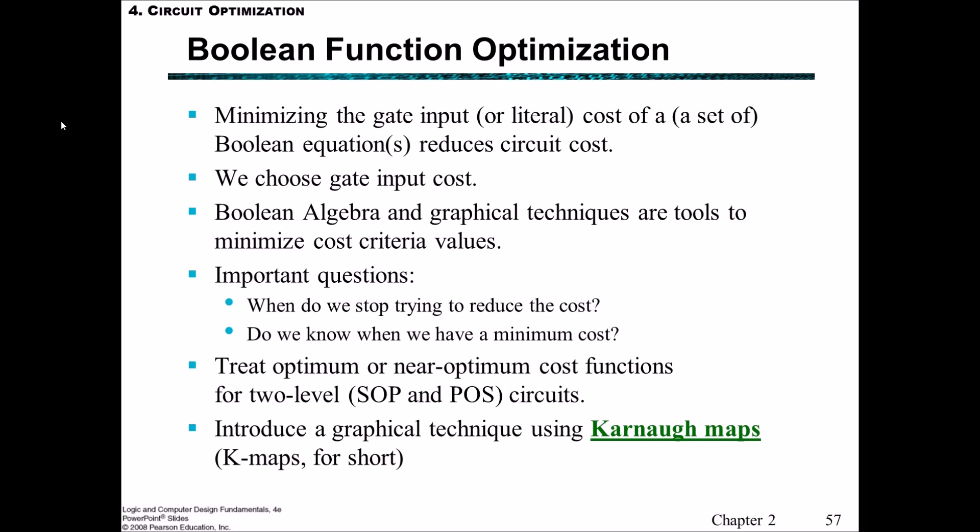We use Boolean algebra and graphical techniques as tools to minimize the cost criteria values. But an important question we have to ask is, when should we stop trying to reduce the cost? And when do we know that we've got the minimum cost? In the next part of this lecture, we'll introduce a graphical technique called Karnaugh maps, or K-maps for short.